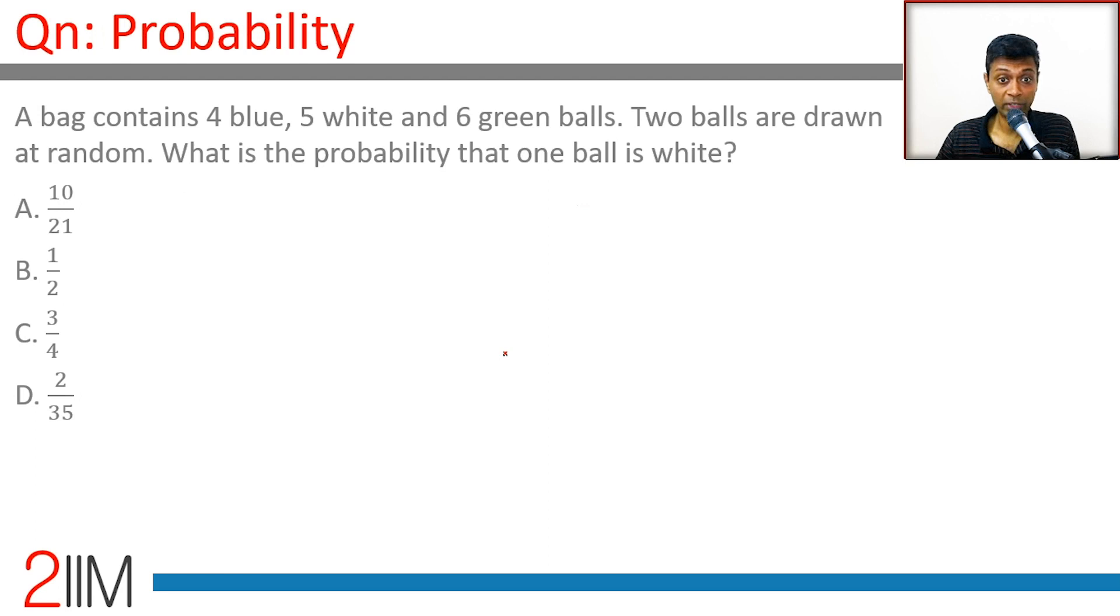A bag contains 4 blue, 5 white, and 6 green balls. Two balls are drawn at random. What is the probability that one ball is white?